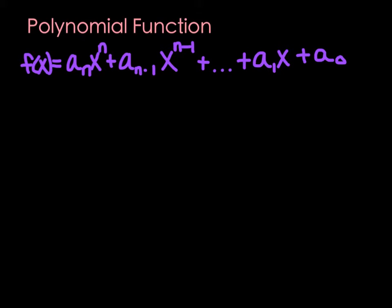A standard polynomial function is written as f of x equals a sub n times x to the nth, where n is our highest power. The next term has the coefficient for the next lowest power. So if n was 4, the next one would be 3, and so on, until we get to the coefficient with just x, and then the constant.